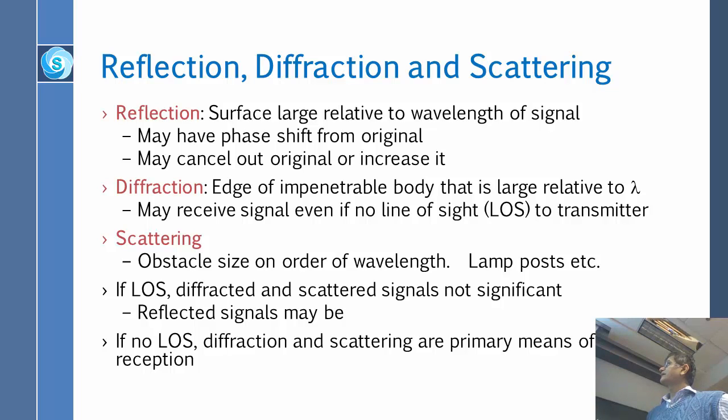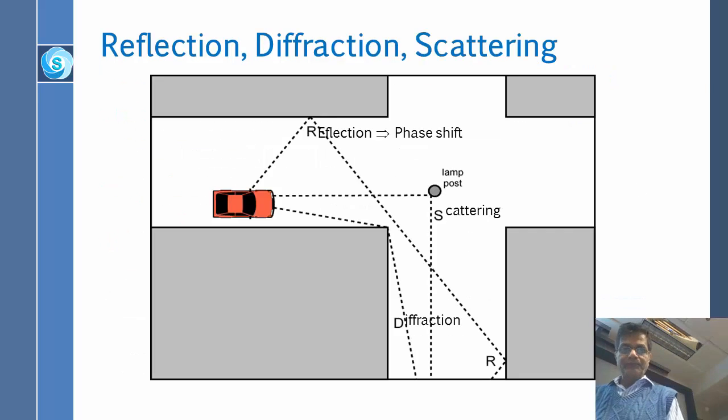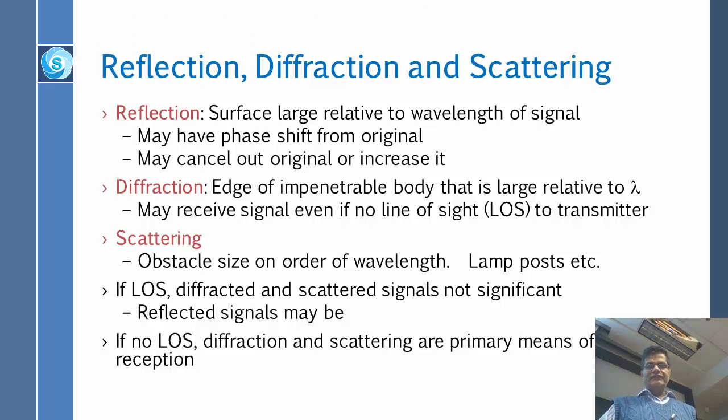If LOS, line of sight, diffracted and scattered signals are not significant, reflected signals may be. So if you are right here, line of sight, then these things would be small compared to what you get directly. And if no line of sight, diffraction and scattering are the primary means of reception.